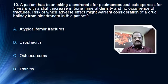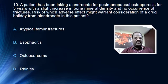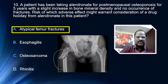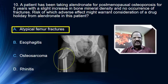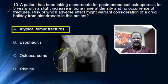A patient has been taking alendronate for post-menopausal osteoporosis for the past 5 years, with a slight increase in bone mineral density and no occurrence of fracture. Risk of which adverse effect might warrant a drug holiday from alendronate in this patient? Options are atypical femoral fracture, oesophagitis, osteosarcoma, and rhinitis. The right answer is atypical femoral fracture. Alendronate on chronic use may cause atypical fracture of the femur. To avoid this complication, a drug holiday may be needed after more than 5 years of use.